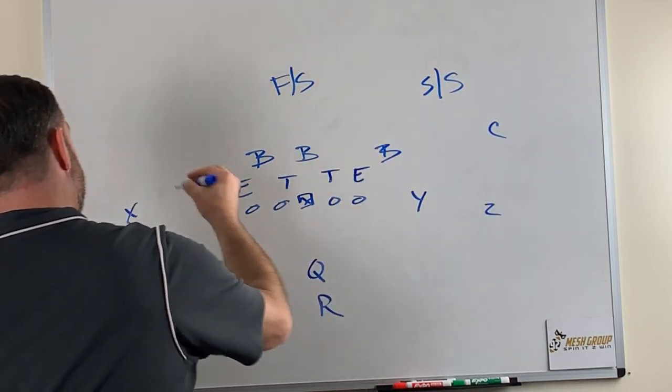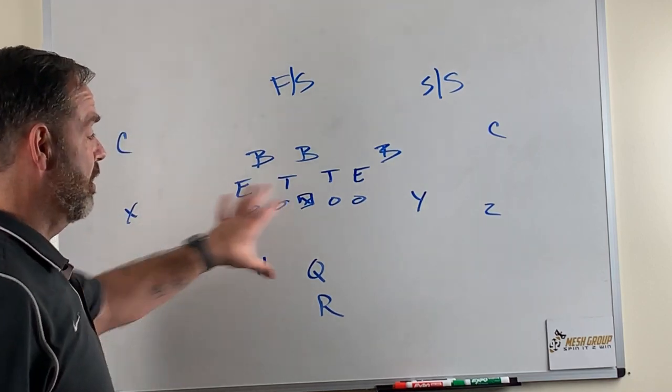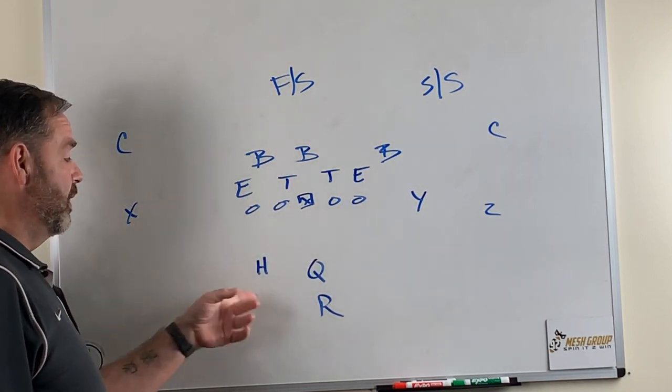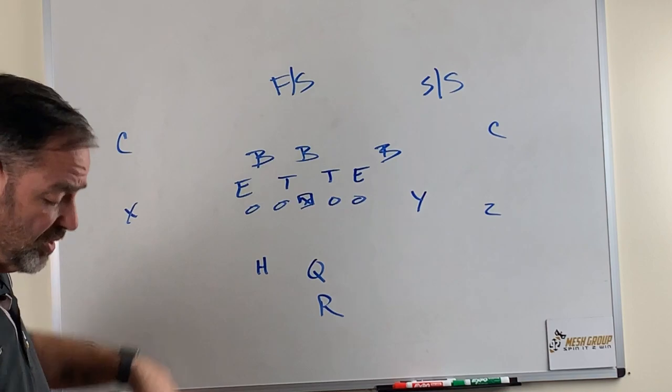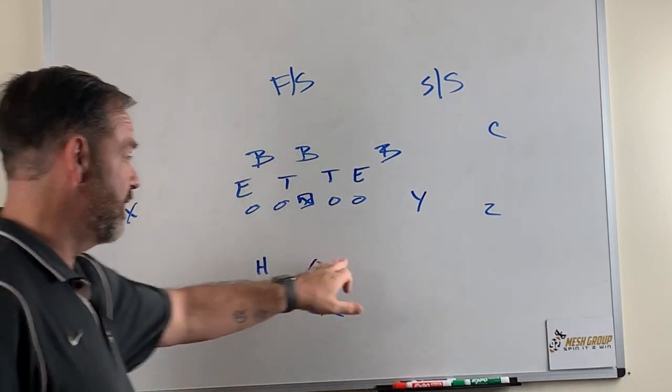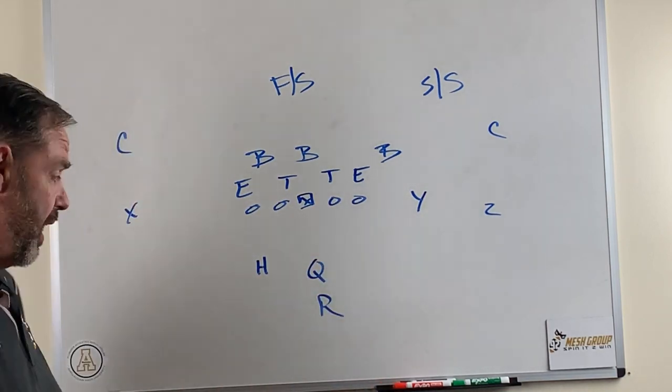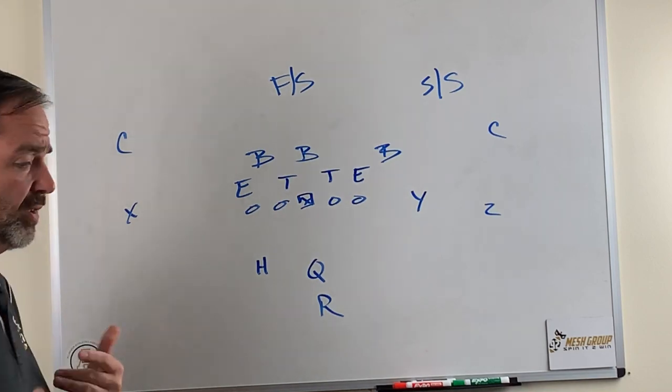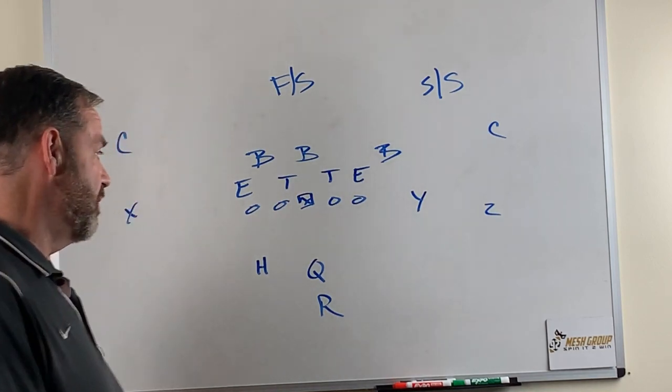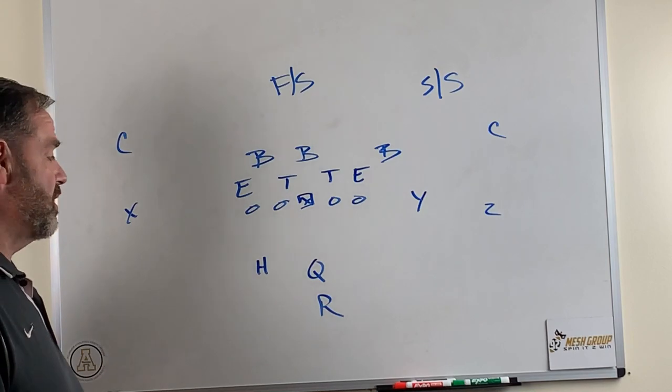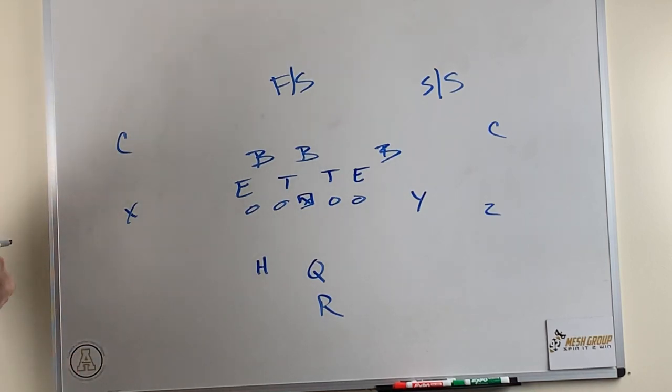The first one we're going to talk about is out of Halo. It's our two-by-one kind of open set with our H to the weak side, so we call that Halo, H to the left, and then Hero would be H to the right. I try to use one word play formation so that we don't have to get directional in those kind of things.